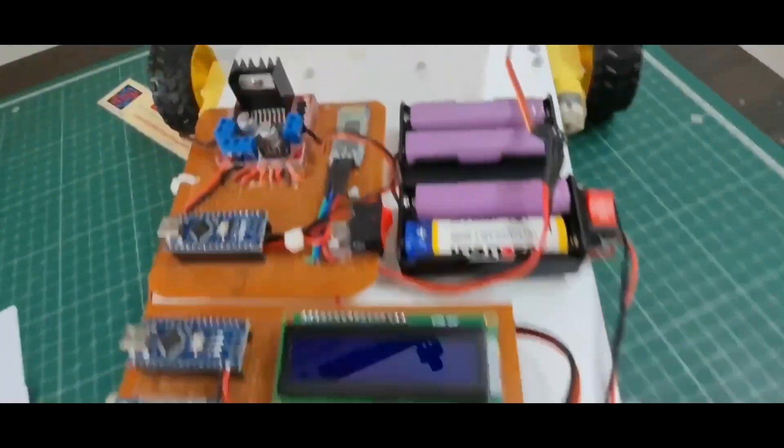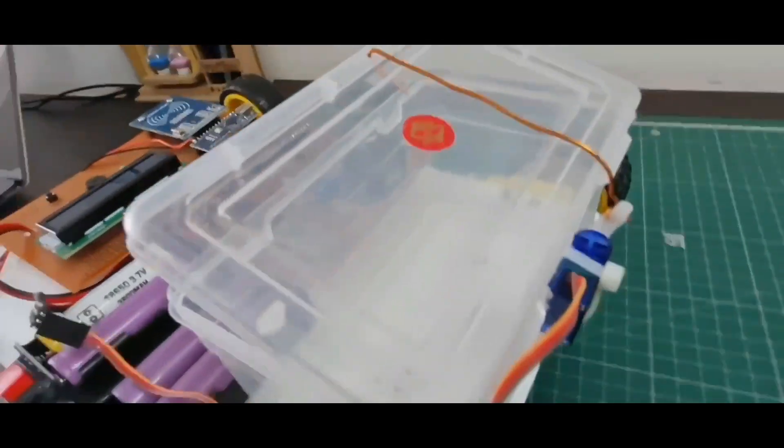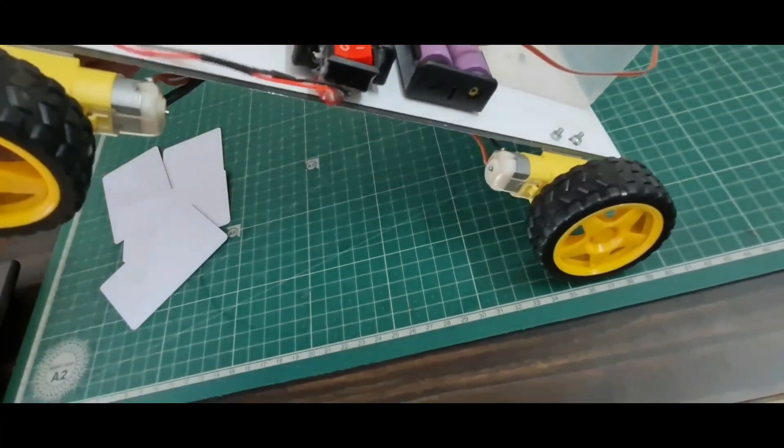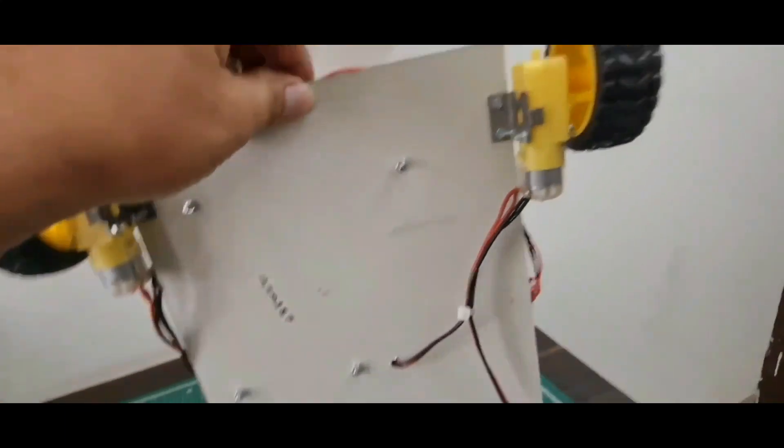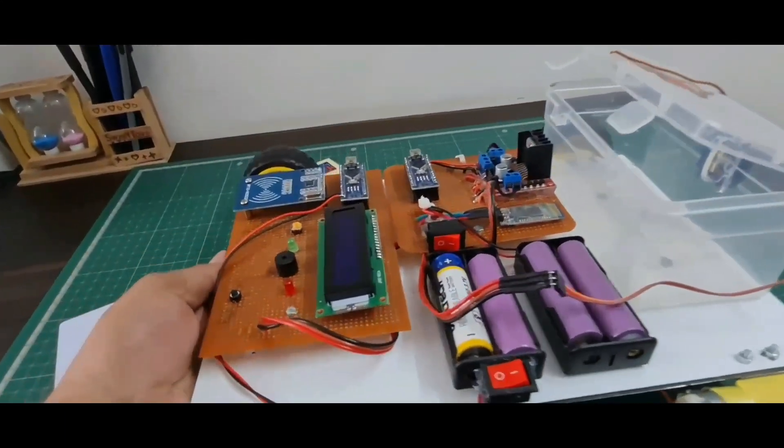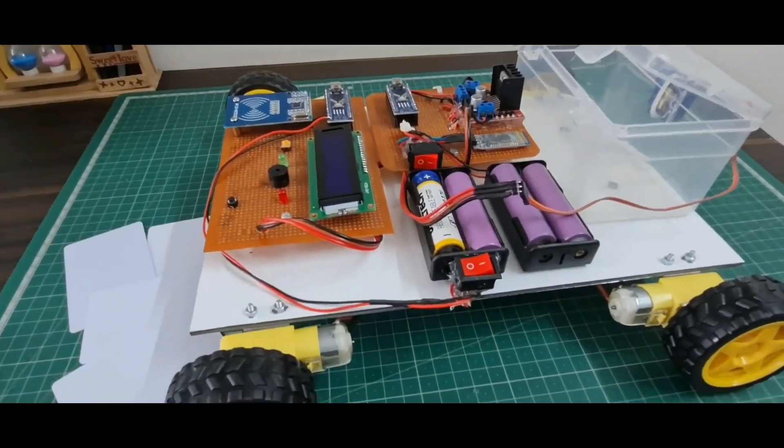I use two switches and an SG90 servo motor to open and close the box. Here I use four BO motors. This is the complete hardware of this project.